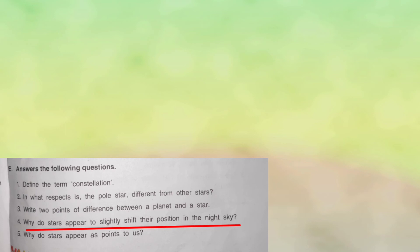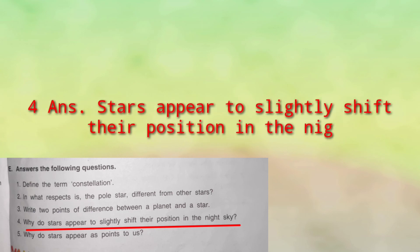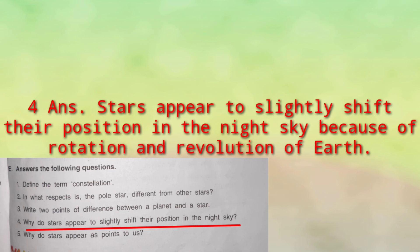Fourth question: why do stars appear to slightly shift their position in the night sky? Because of the rotation of the earth from west to east, and also due to the revolution of the earth. Jab earth move karti hai west to east direction mein, toh hume stars east se west direction mein move karte hue lagte hain, isliye unki position halka sa shift ho jaati hai.